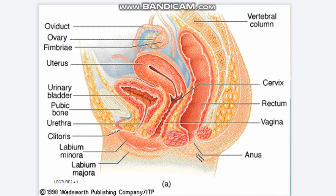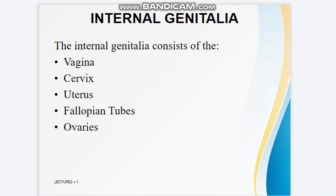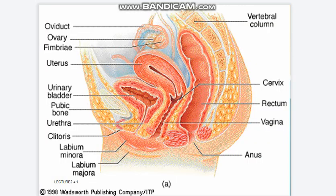There is the cervix, which connects the uterus to the vagina. The cervical opening to the vagina is small; this acts as a safety precaution against foreign bodies entering the uterus. During childbirth, the cervix dilates to accommodate the passage of the fetus. This dilation is a sign that labor has begun.